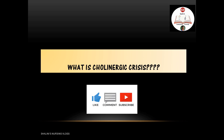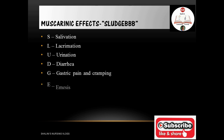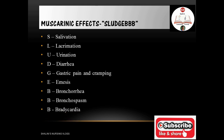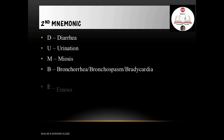There are muscarinic and nicotinic effects in cholinergic crisis. For muscarinic effects, the mnemonic SLUDGE BB covers: Salivation, Lacrimation, Urination, Diarrhea, Gastric cramping, Emesis, Bronchorrhea, Bronchospasm, and Bradycardia. An alternative mnemonic is DUMBBELLS: Diarrhea, Urination, Miosis, Bronchorrhea, Bronchospasm, Bradycardia, Emesis, Lacrimation, and Salivation. Either mnemonic can be used to remember the muscarinic effects.